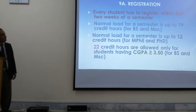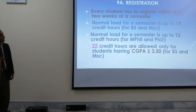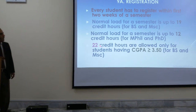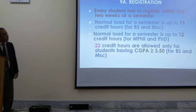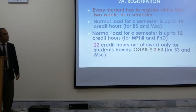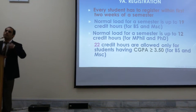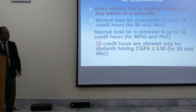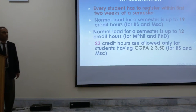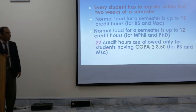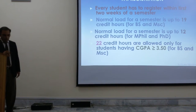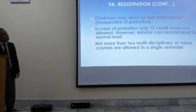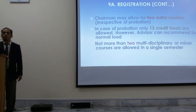The normal load for MPhil and PhD students is up to 12 credit hours per semester, which is a little less. 22 credit hours are allowed only for students with a GPA greater than 3.5 — this is the faster track, allowing one extra course for students with a higher GPA. Additionally, the chairman can allow 2 extra courses irrespective of probation.